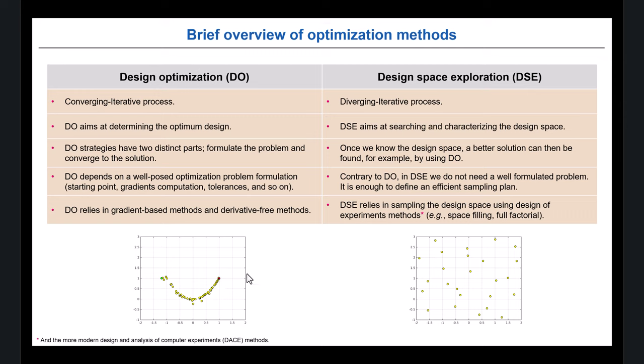Formulating the problem implies that you need to give a starting point, some other information like step size, and how you want to compute gradients if using gradient-based methods, or the optimal hyper-parameters if using derivative-free methods. Sometimes you need to optimize the optimizer to get the best hyper-parameters, because you have many variables that can change anything. This is design optimization — you need to define your problem.